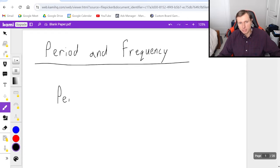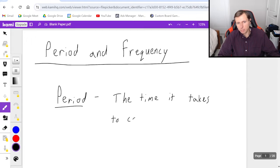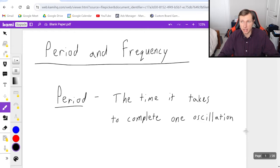So first let's define period. Period is going to be, or at least I'm going to define it as, the time it takes to complete one oscillation. Now I want you to think of an oscillation as like a lap or a loop or a cycle.